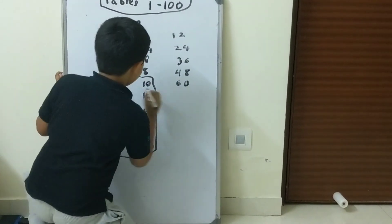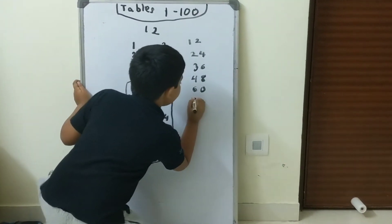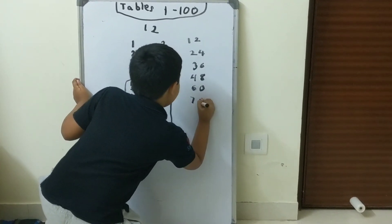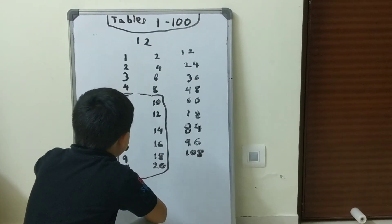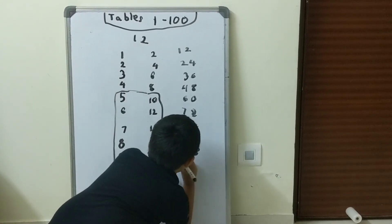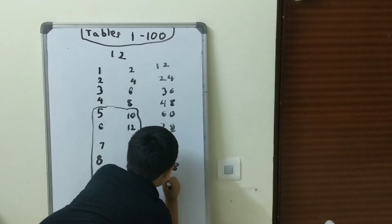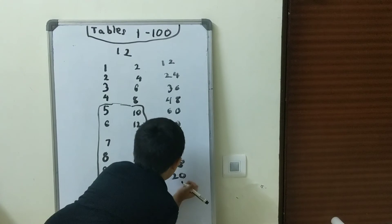So, 60. 6 and 1, that's 7. And 72. And finally 1, 2, 0. 120.